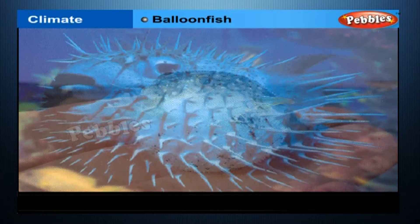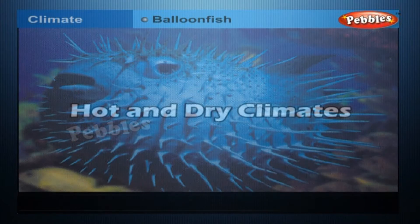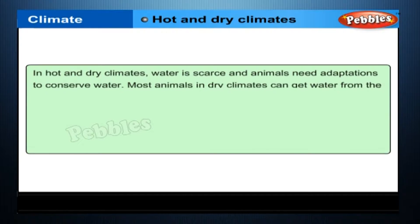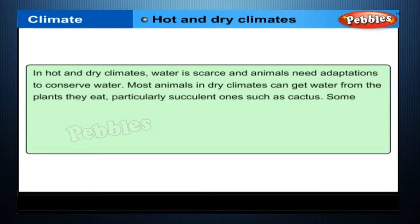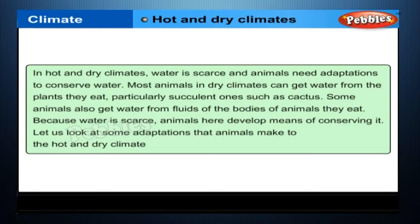This adaptation helps the puffer fish to protect itself when threatened by a predator. In hot and dry climates, water is scarce and animals need adaptations to conserve water. Most animals in dry climates can get water from the plants they eat, particularly succulent ones such as cactus. Some animals also get water from the fluids of the bodies of animals they eat. Because water is scarce, animals here develop means of conserving it.